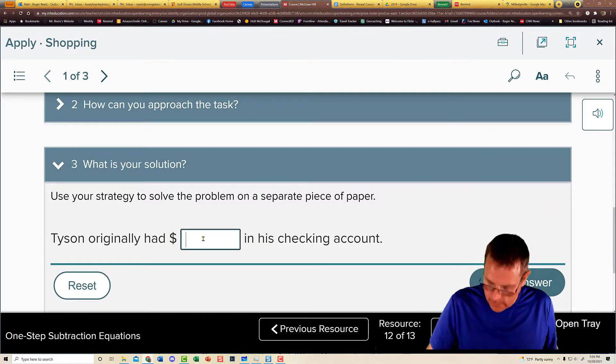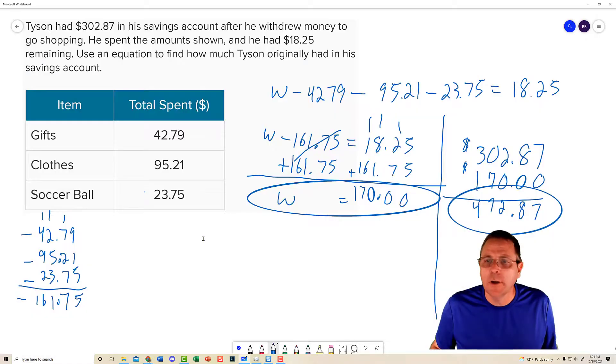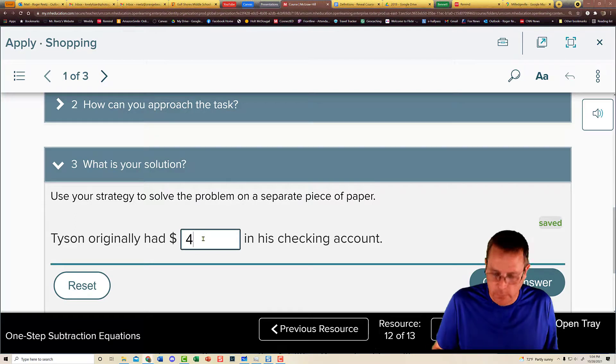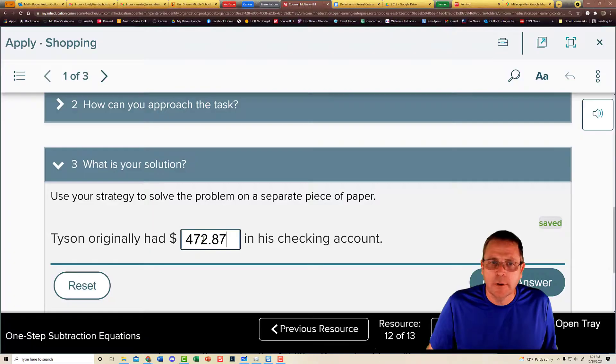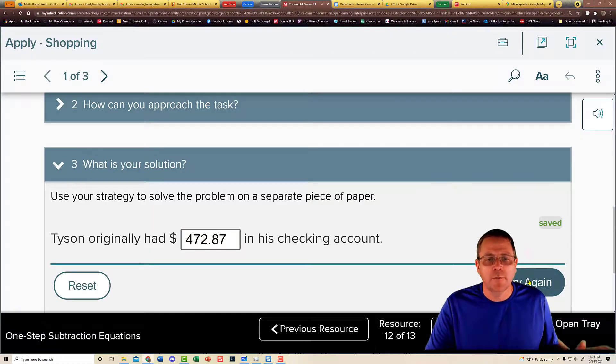He had $472 and 87 cents that he started off with. Come down here. I had, was it 482? Nope. 472. And 87. Yep. 472 dollars. 87 cents.